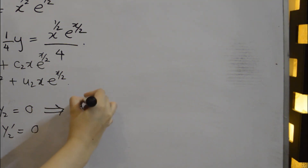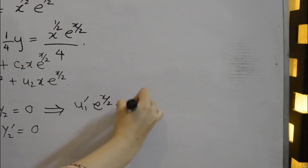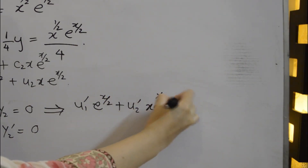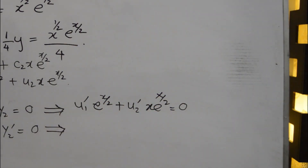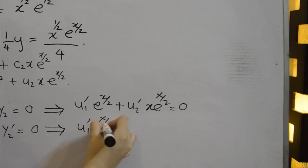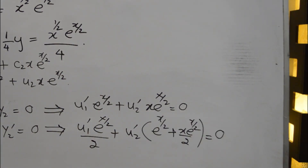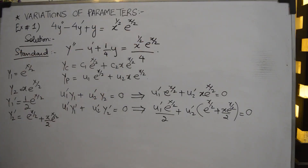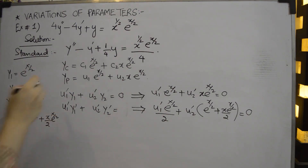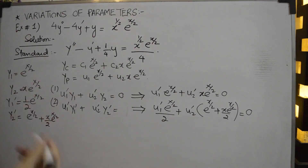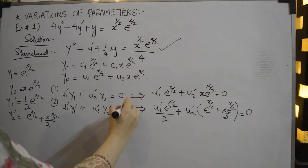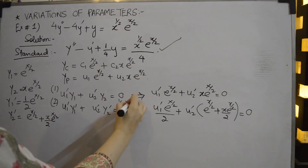The system of equations is: u1'*e^(x/2) + u2'*x*e^(x/2) = 0 (first equation), and u1'*(1/2)*e^(x/2) + u2'*(e^(x/2) + (x/2)*e^(x/2)) = R(x) (second equation). R(x) equals x^(1/2)*e^(x/2)/4.